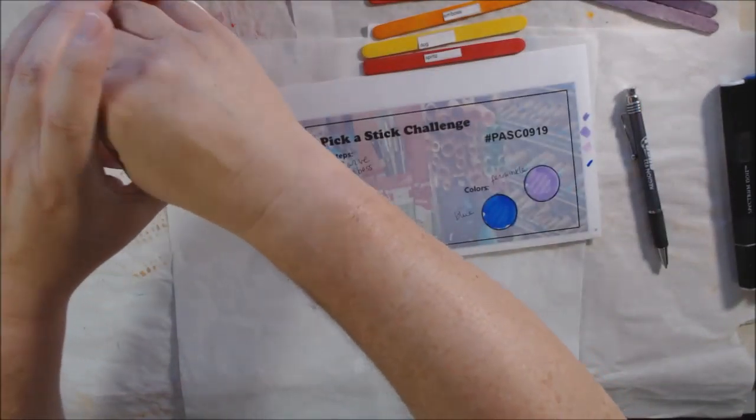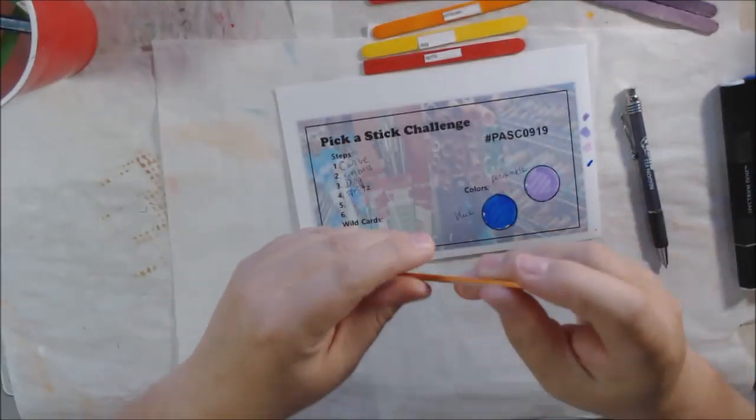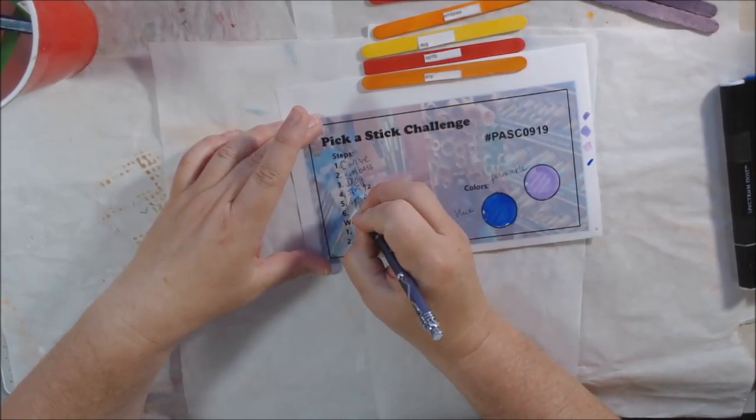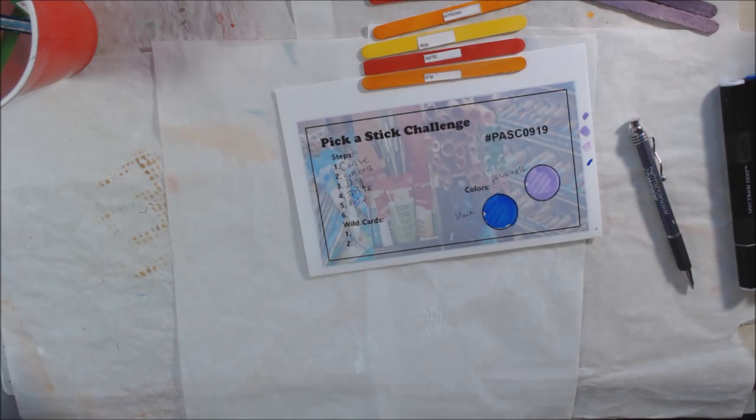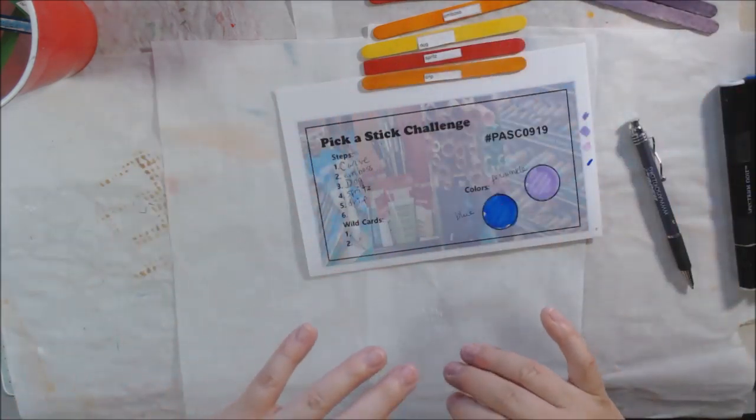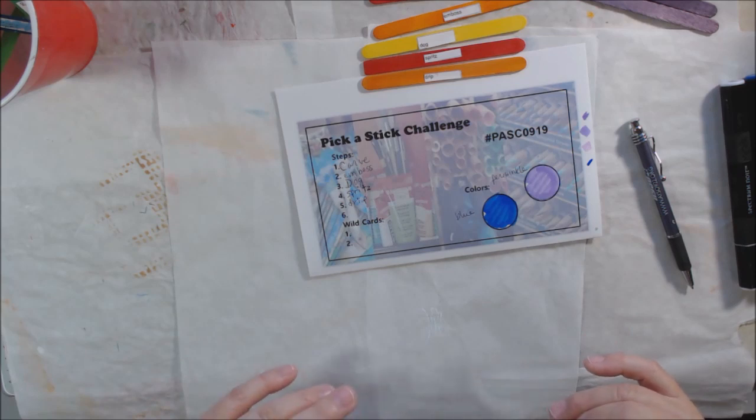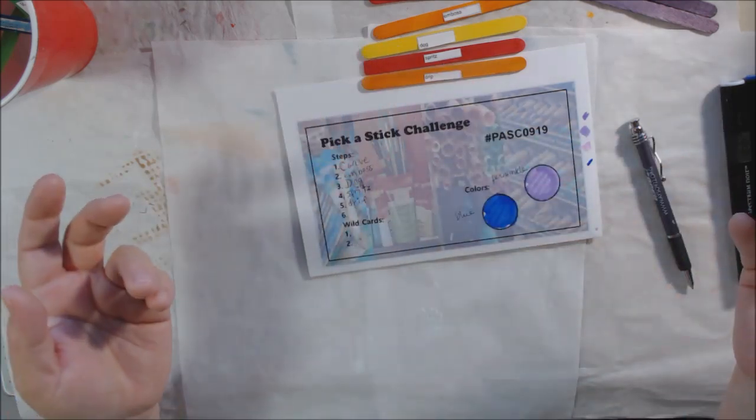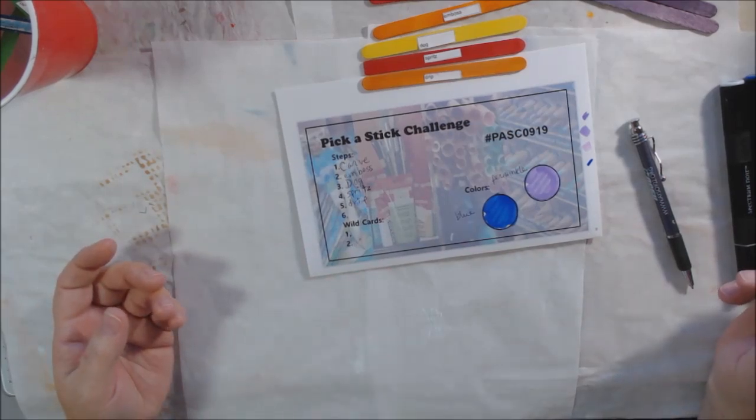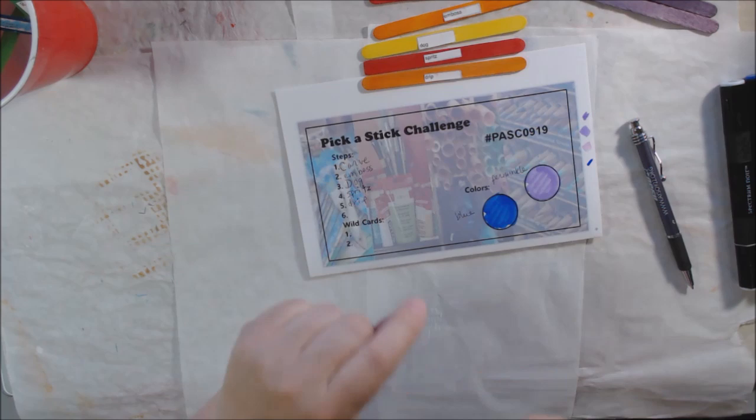Step six is drip. Looks like we're getting some fun wet techniques. Dripping, you can drip paint, you can drip ink. You could just drip it onto the paper, you can drip it down the paper and let it run. Whatever, you know what I mean. I'm telling you, it's really early. Just let it run down the paper.